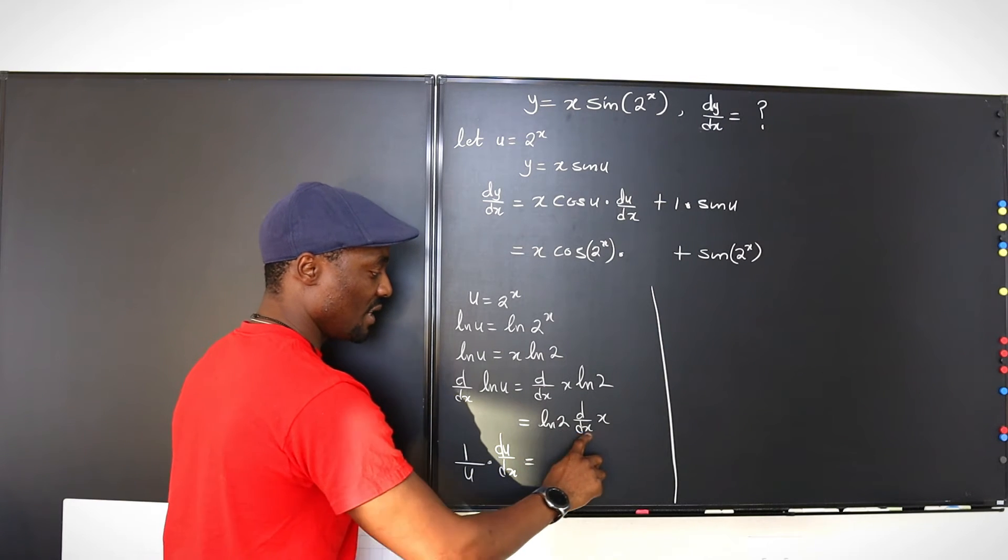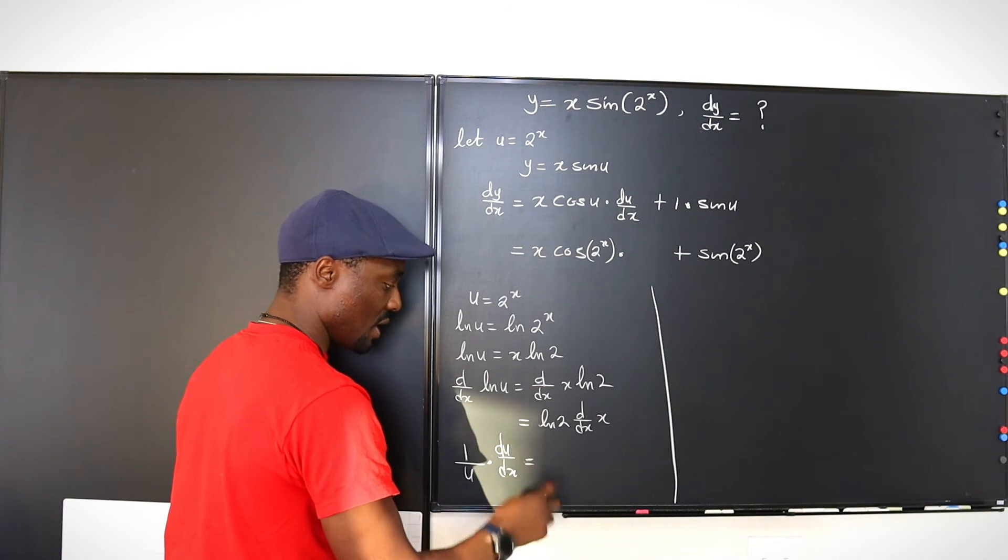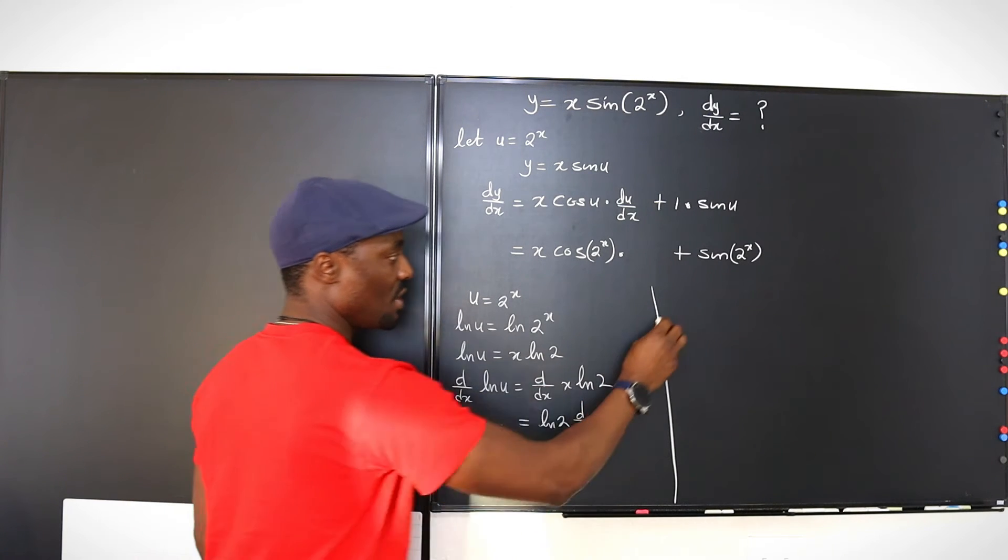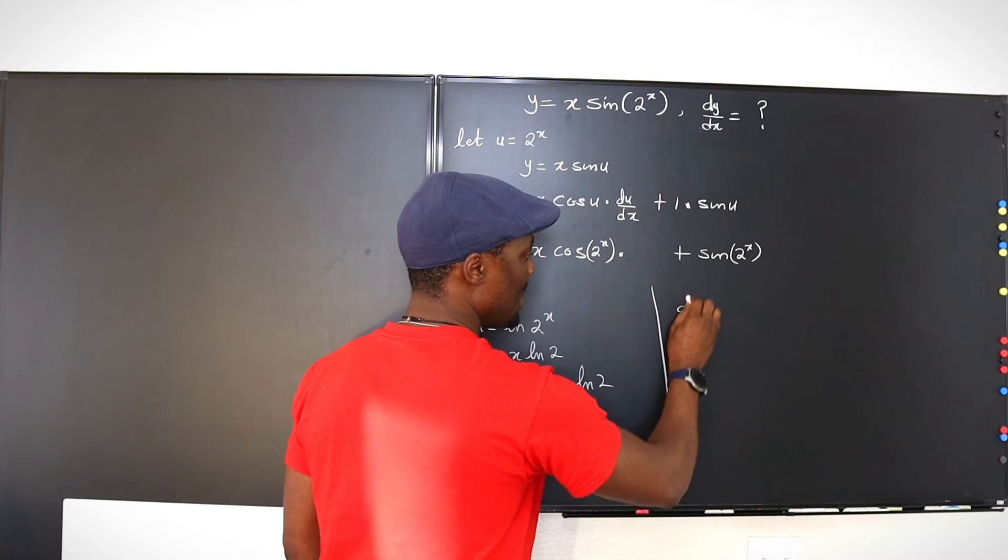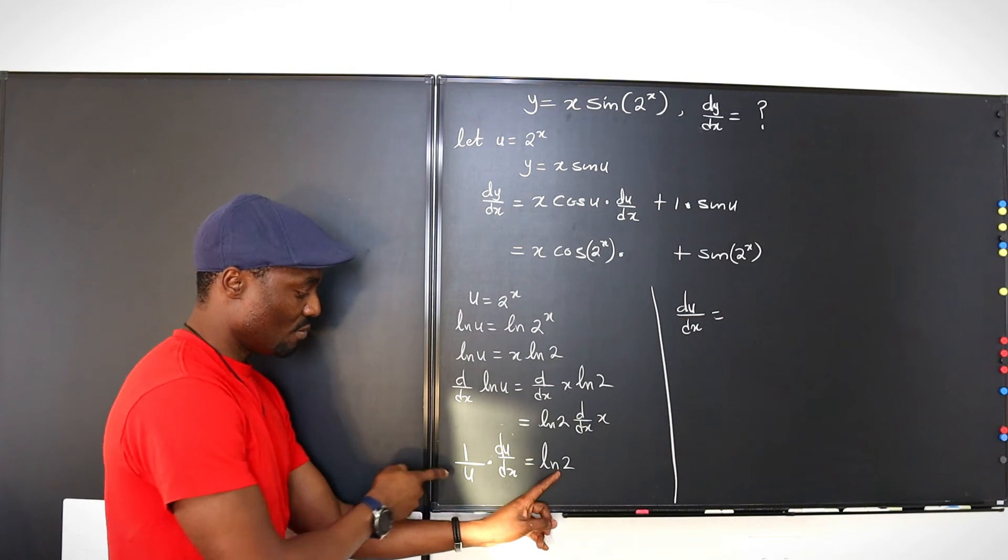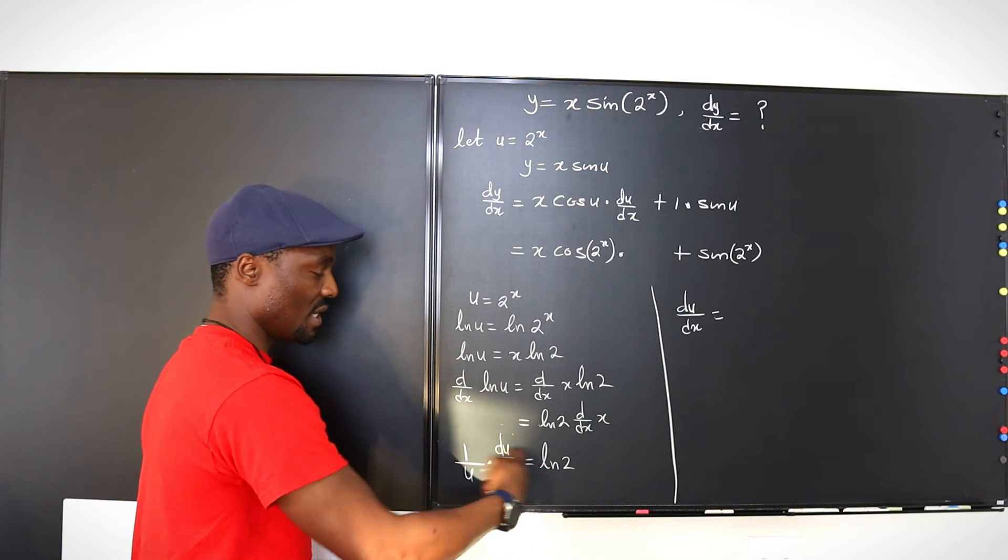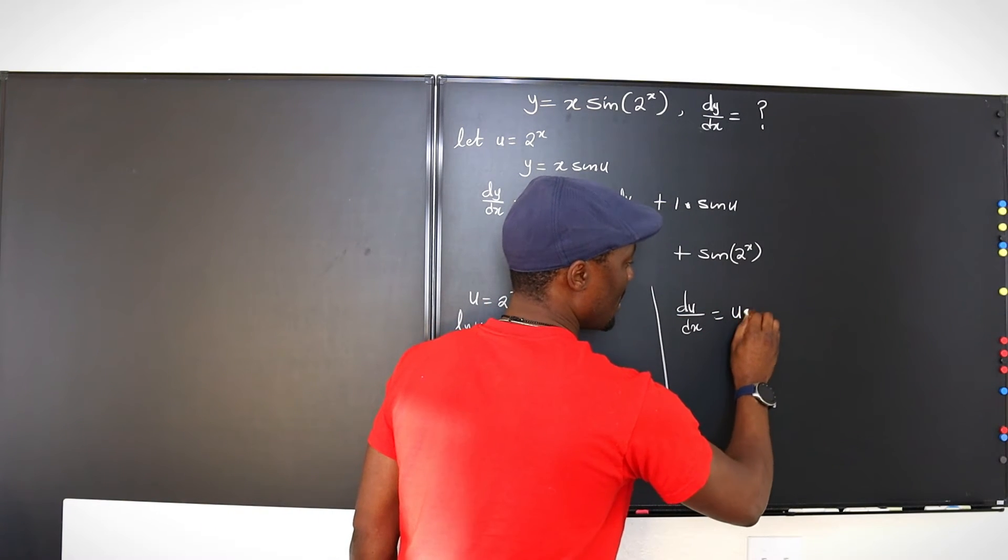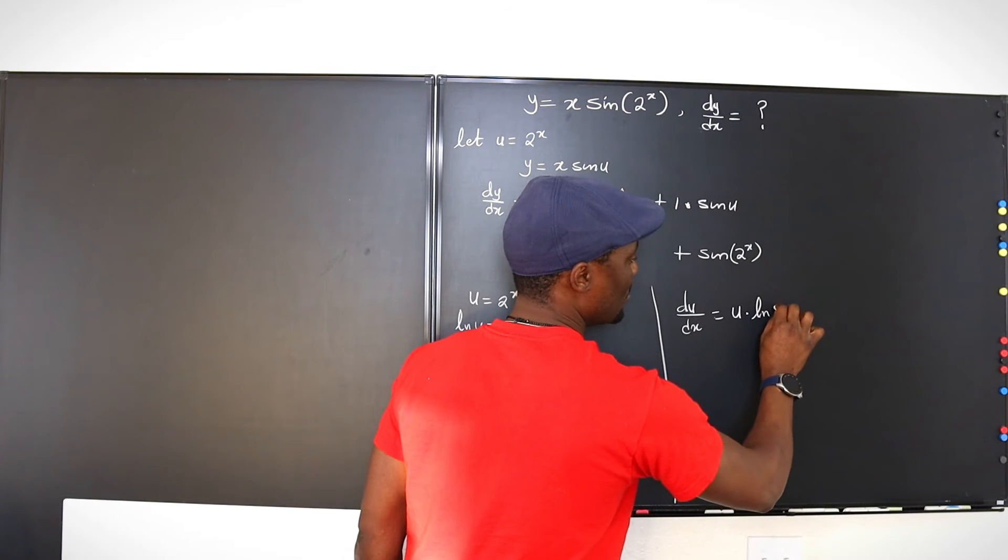When you differentiate x, you get 1. 1 times ln 2 is ln 2. So what is du dx? From here, we can see that du dx is equal to ln 2 multiplied by u. If you multiply both sides by u, you're going to get u multiplied by ln 2.